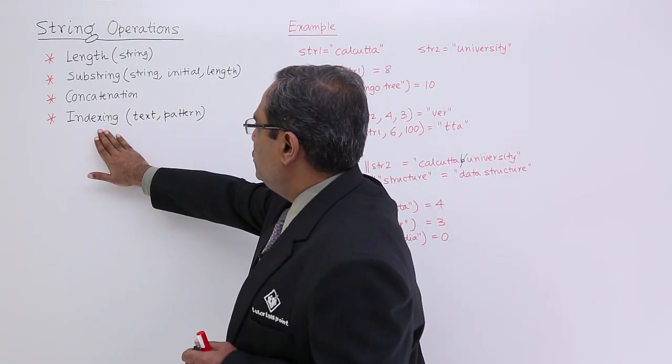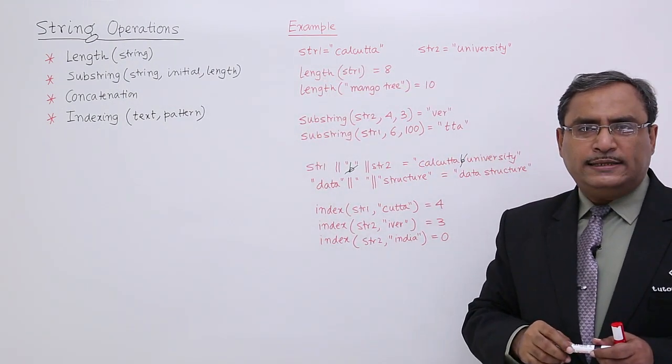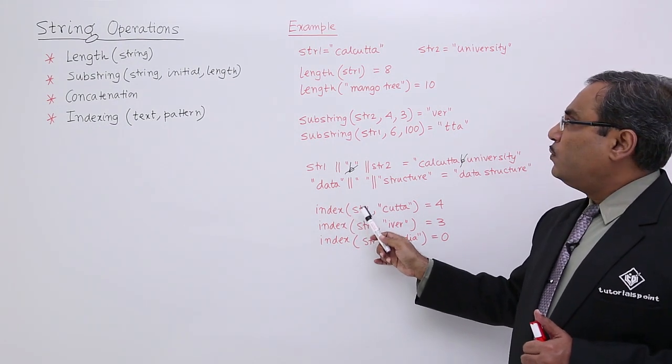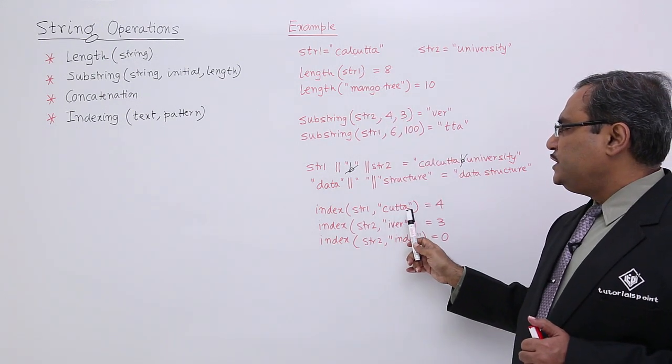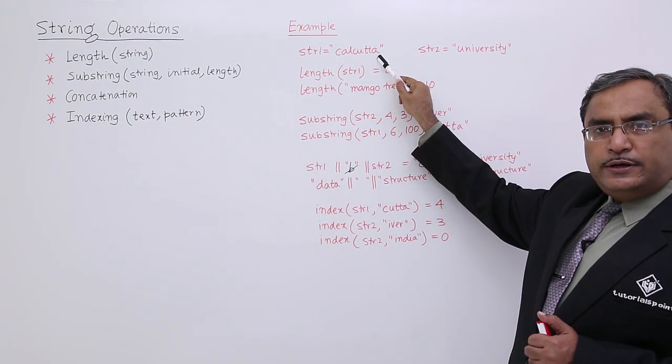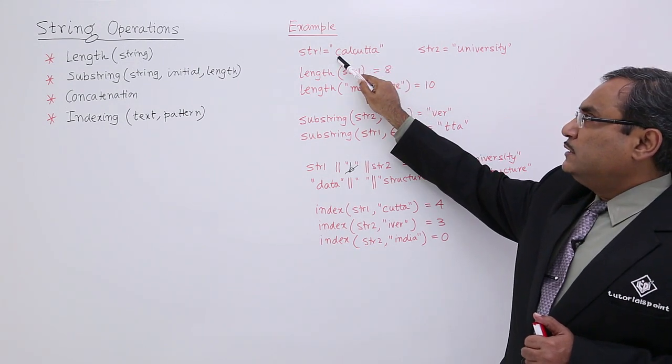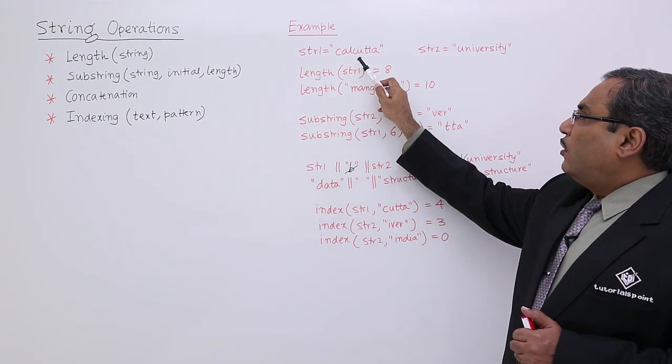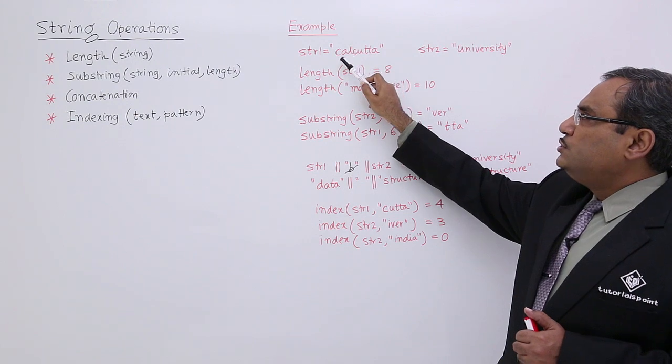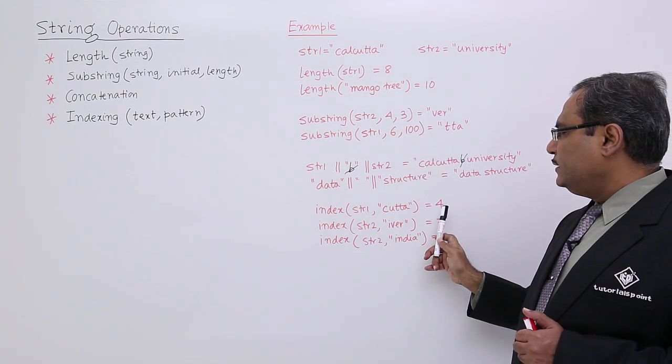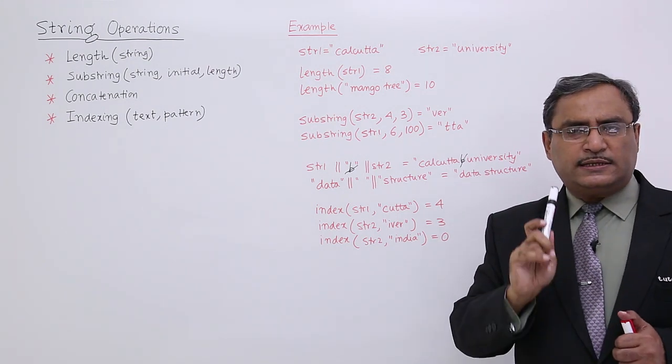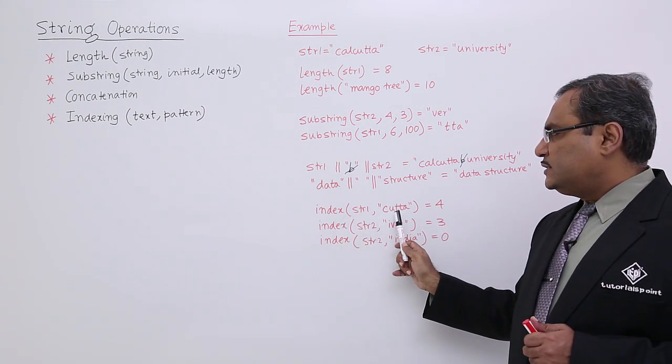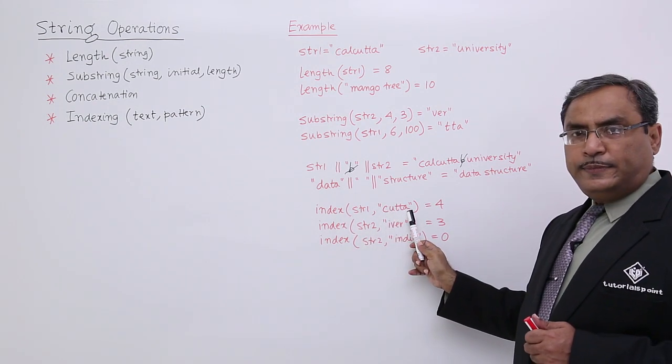The last one is the indexing. Should have two input arguments: one is the text, another one is the pattern. Text here is STR1. I am searching for CUTTA. CUTTA can be obtained from the fourth place. I have considered the first character is at place number 1. If I could have considered that one 0, then obviously it will be 0, 1, 2, so it will be the third place in that case. It will be returning 3. But here, as I consider the first character is at position 1, so it will be returning 4. Index is actually searching this particular substring from the main string.